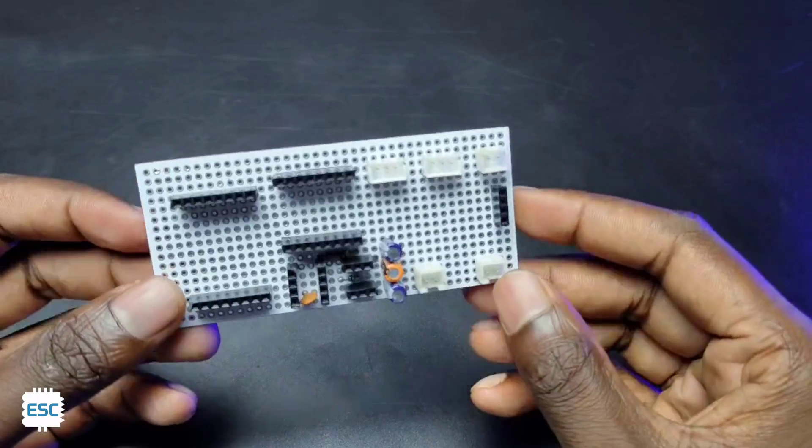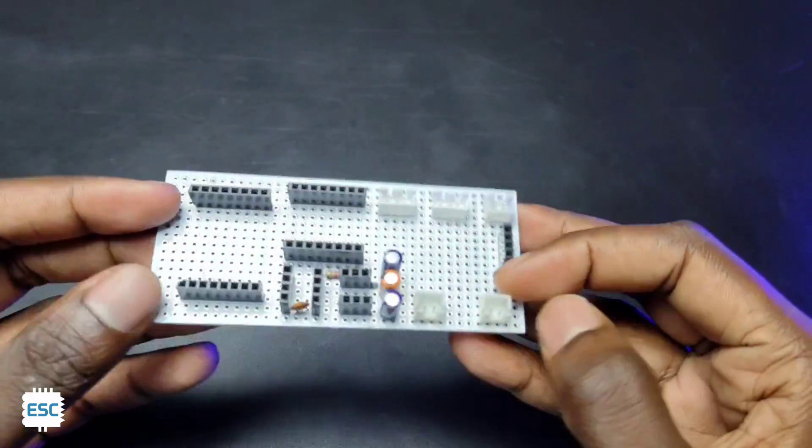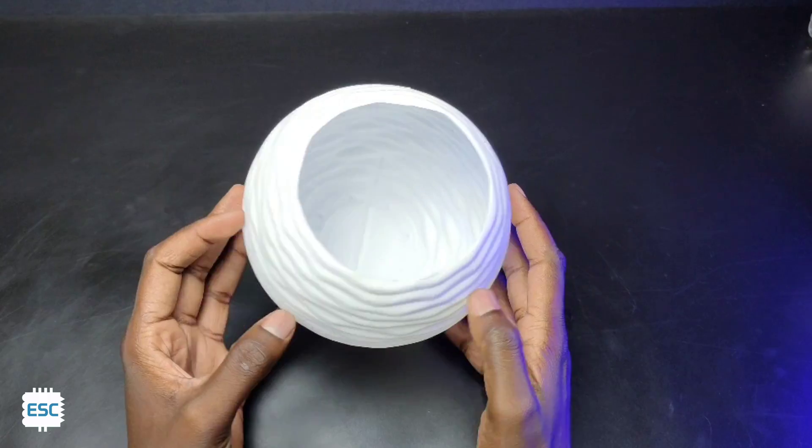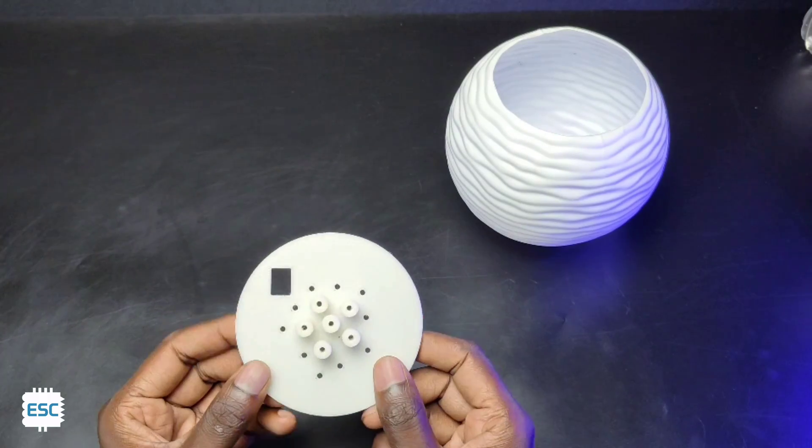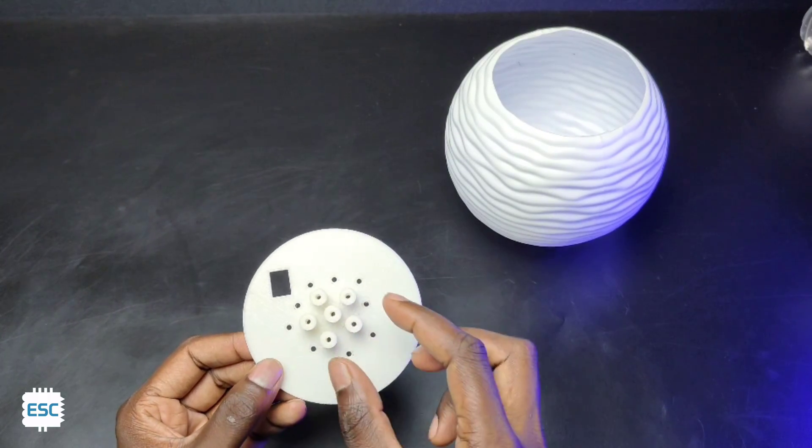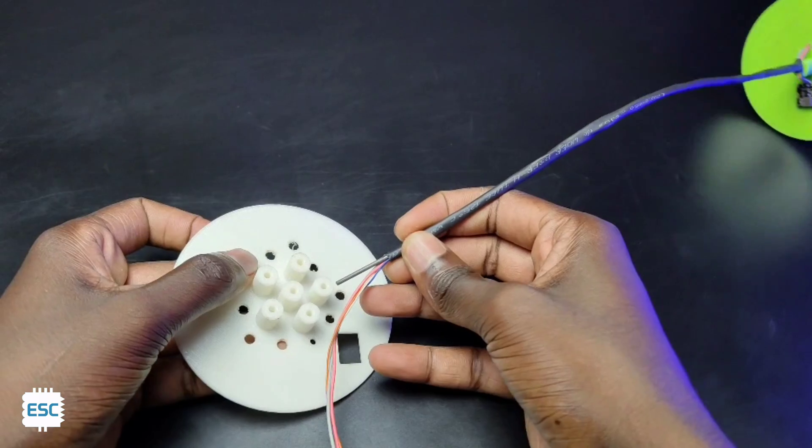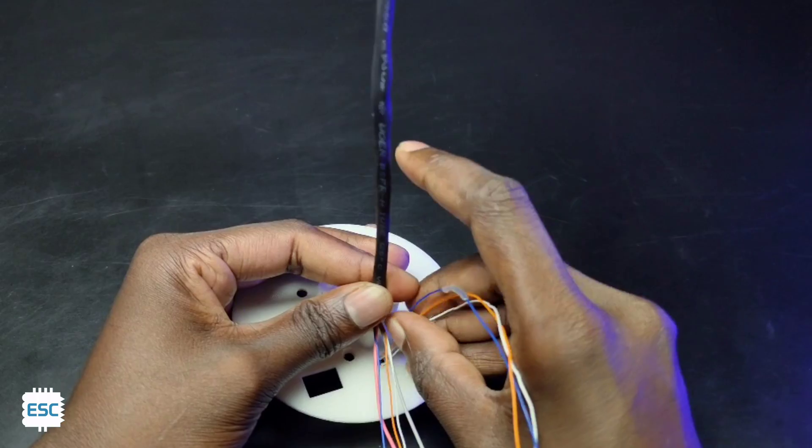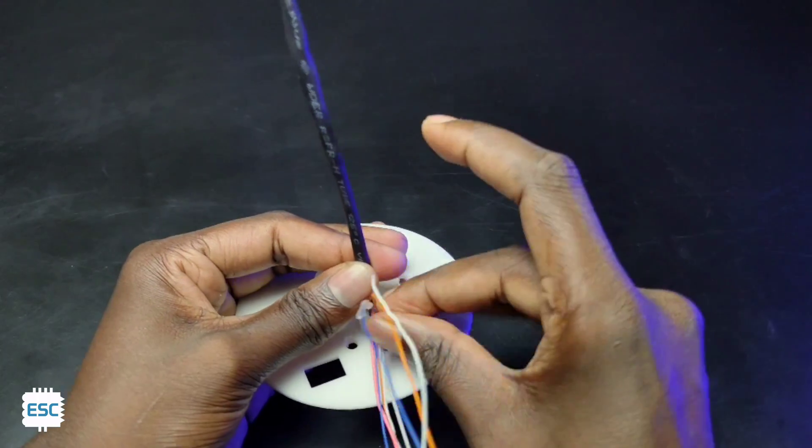Here I used a 3D printed pot as the base. Also this 3D printed base holds all the leaves together. I placed all the leaves on the base and connected the wires according to the circuit diagram.